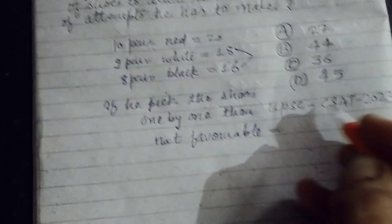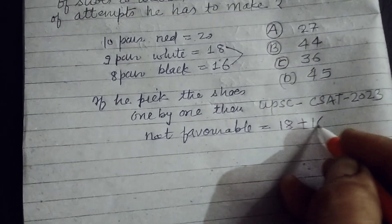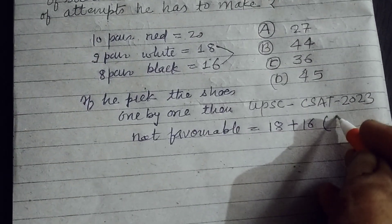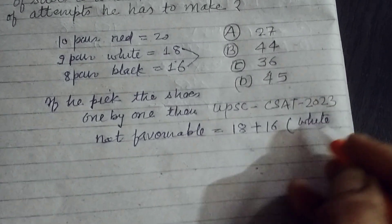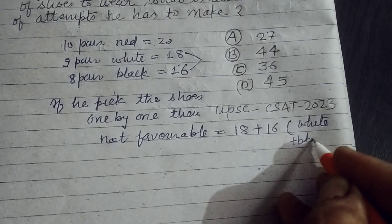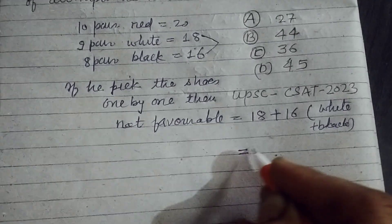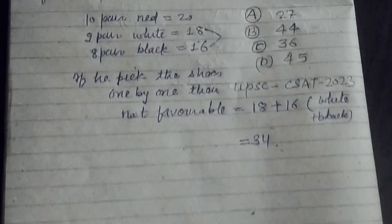18 plus 16, white plus black. So these are 34 attempts which are not favorable.